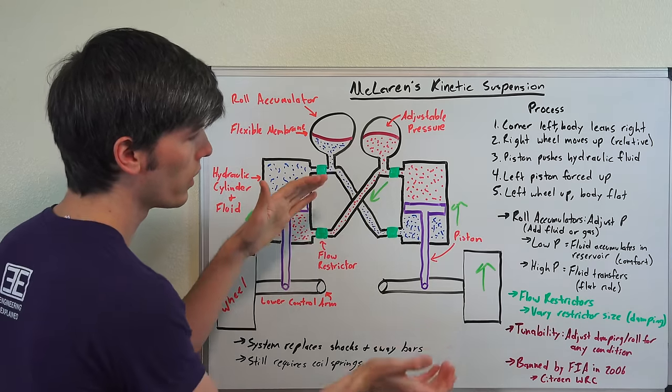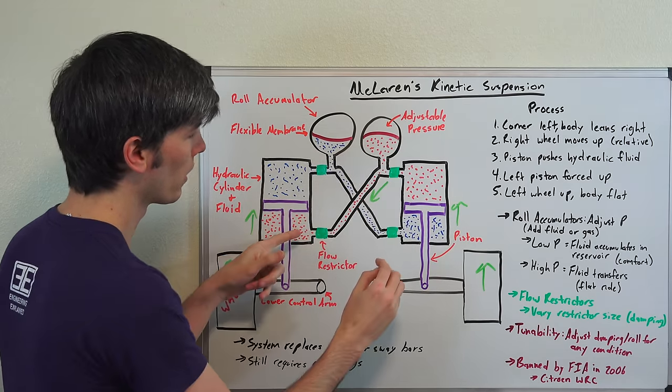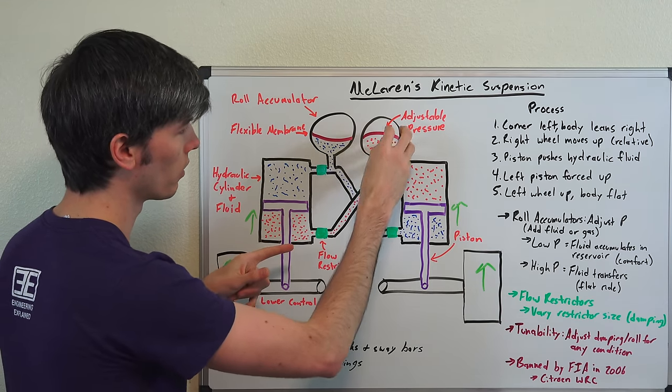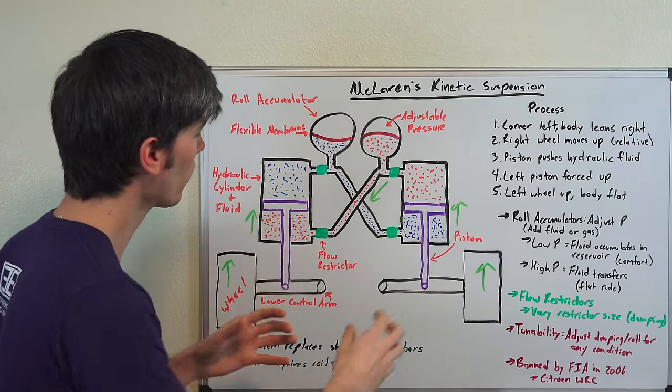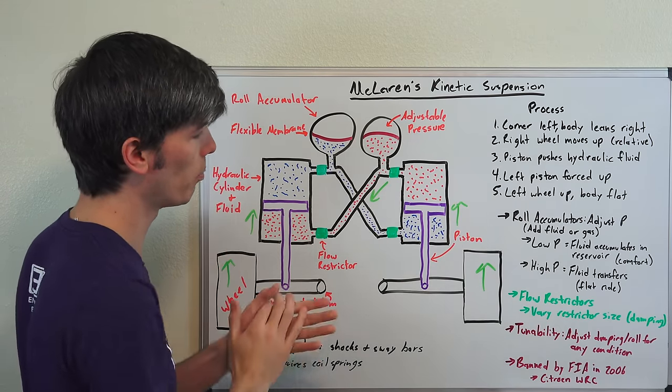And so if you're at a low pressure when you hit a bump that's going to force this flexible membrane up, and rather than send that fluid to the other cylinder. So if you had it at a soft setting, basically it would accumulate there in that accumulator rather than passing over, so that the whole car doesn't lift when you hit a bump.